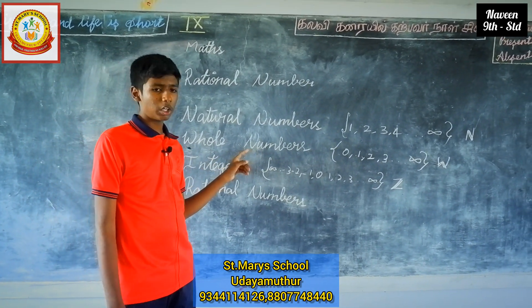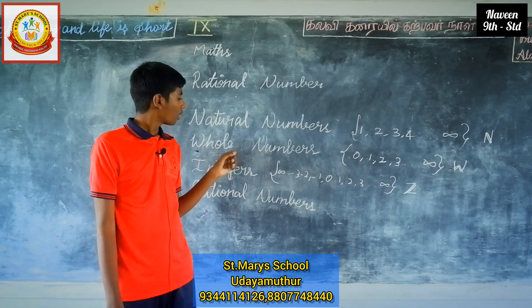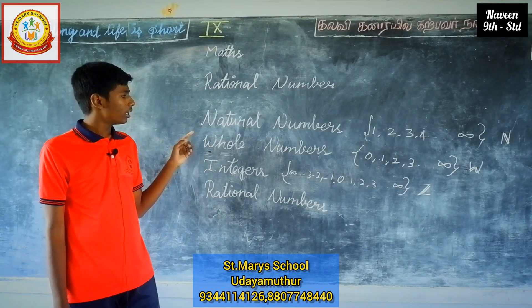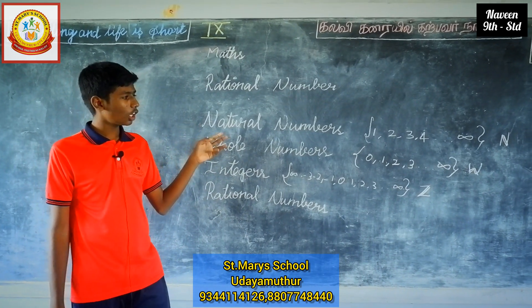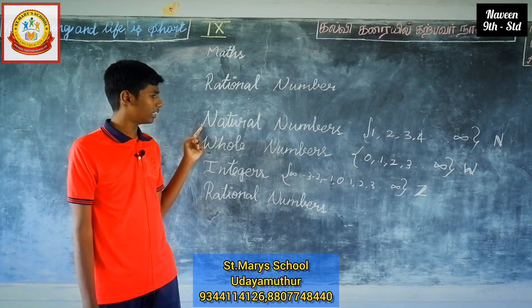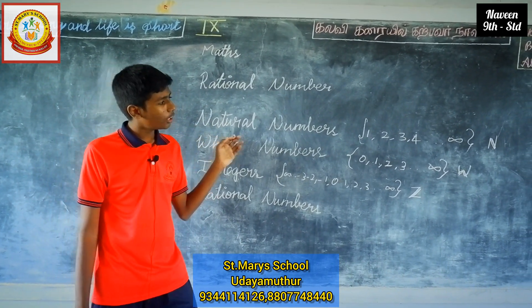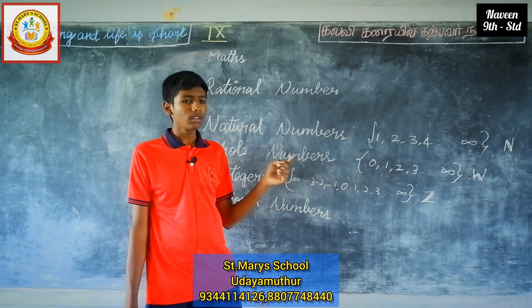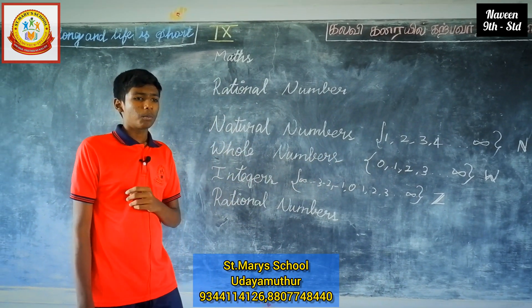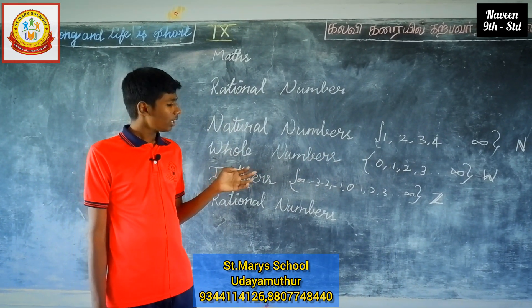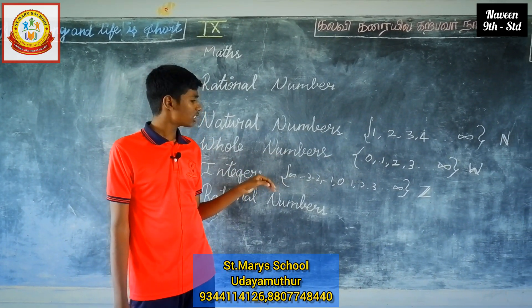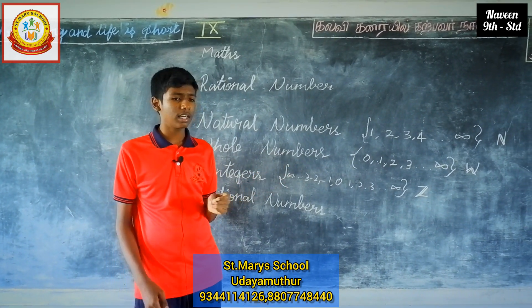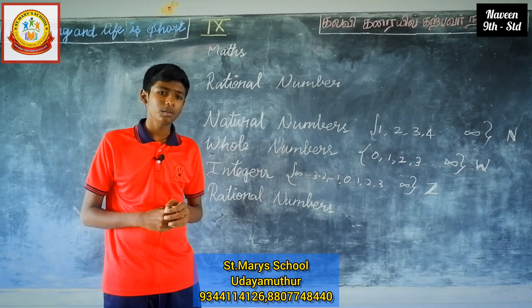Similarly, the word natural number started with N, so it is denoted by N. But why are integers denoted by Z? Anybody?